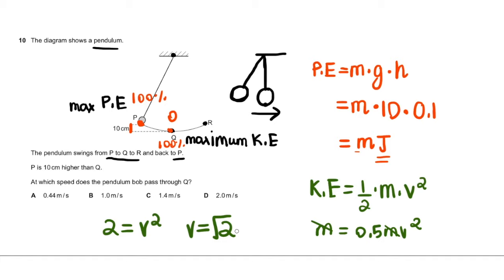So there you go. We have the speed, the velocity of the bob at point Q, where its kinetic energy is at its maximum. So what is root 2? Well, that's just 1.41. And what option matches this? C does. So C is the answer.